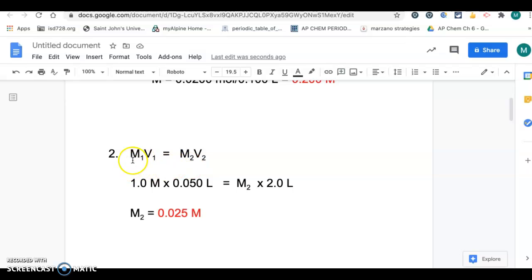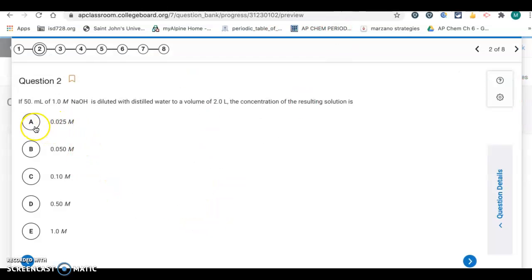for this we're going to use M1V1 equals M2V2. So this is the dilution equation, so this is our original concentration, 1 molar. Here's the volume, and we're going to dilute it to 2 liters. Now, it said 50 milliliters. We have to have the units of volume match up, so I converted the 50 milliliters into liters. So it just had to convert one to match the other, and then divide and solve for M2, and you get 0.025 molar. So that's going to be letter A.